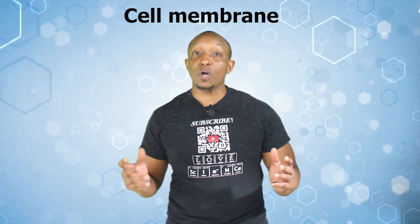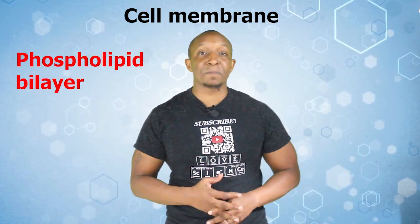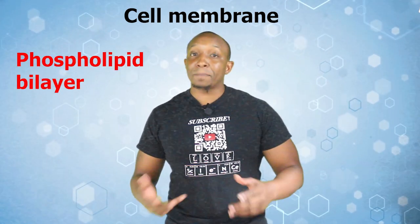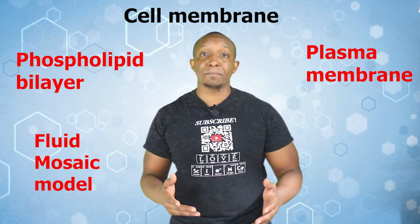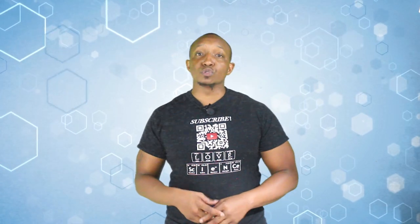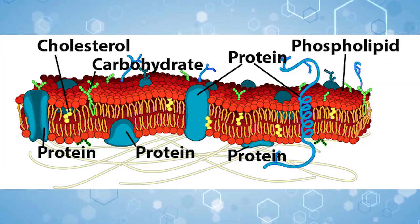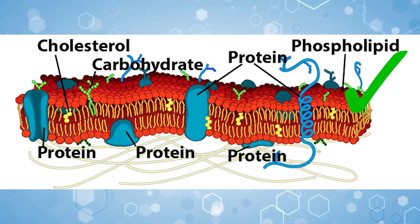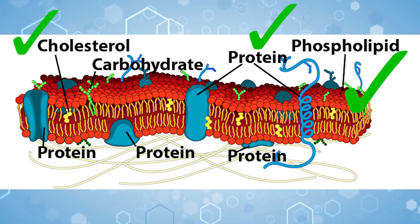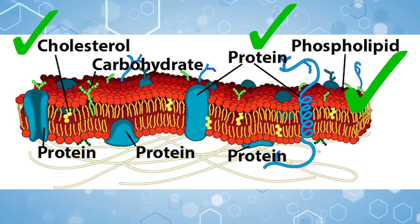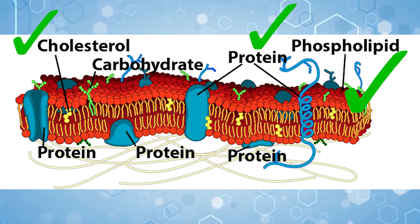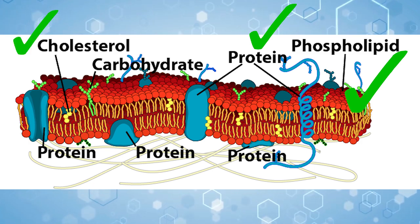In summary, the cell membrane — also known as the phospholipid bilayer, plasma membrane, or the fluid mosaic model — includes three major components: the phospholipid bilayer, proteins, and cholesterol, that largely work together to help the cell maintain homeostasis. Without these working in harmony with one another, any and everything could enter and exit the cell, which would definitely create a bad environment for the cell.